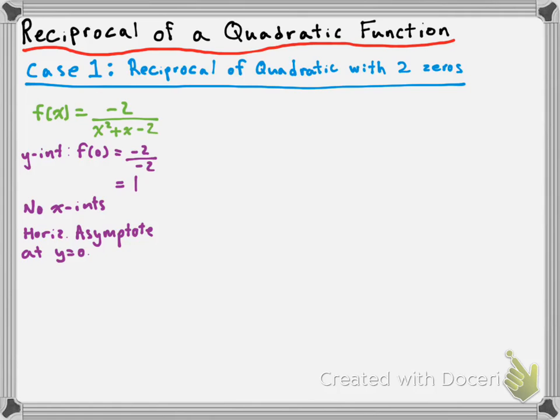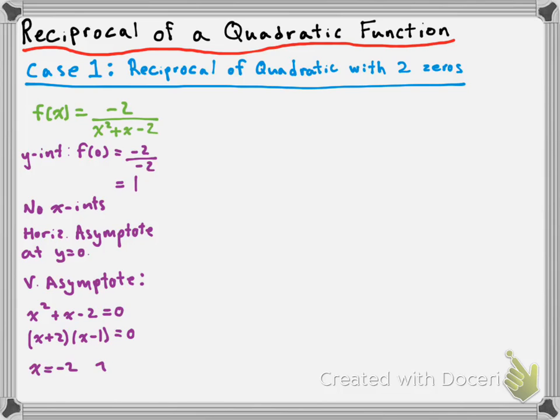Let's talk about our vertical asymptotes. Those occur when the denominator equals zero. So we take our quadratic denominator and set it equal to zero: x squared plus x minus two equals zero. We can solve this by factoring — it factors into x plus two times x minus one equals zero — which means we get vertical asymptotes at x equals negative two and x equals positive one.